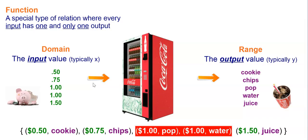So what do I mean by that? Let's look at our vending machine example. If you look at the pairs of input and output values at the bottom, you get $0.50 as an input, cookie as an output, $0.75 chips, $1.50 juice. But if you put in $1, are you going to get pop or water? For that one input, $1, you have two outputs. You have either pop or water.